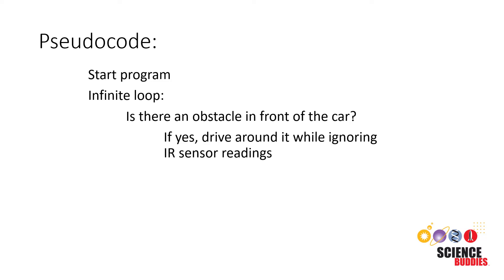First, we start the program, then we enter an infinite loop. In that loop, we're going to check if there's an obstacle in front of the car. If there is, we're going to drive around it while ignoring the infrared sensor readings. Only after checking that, then we will check the infrared sensors.